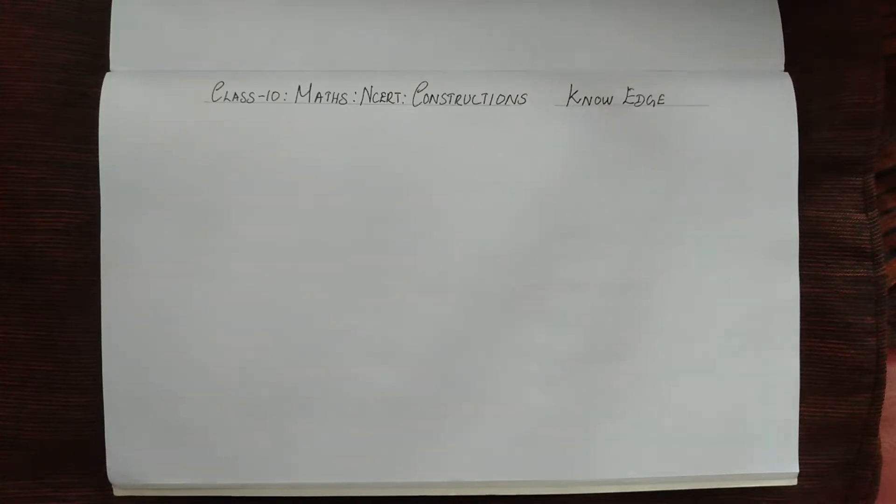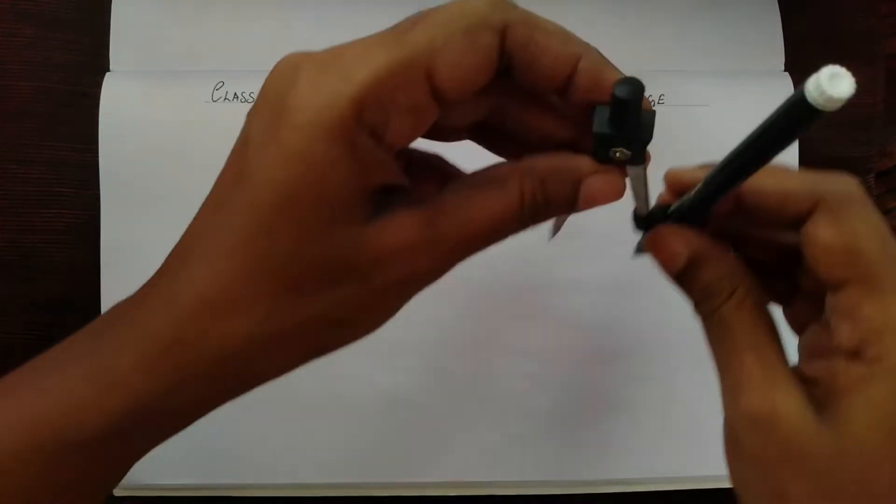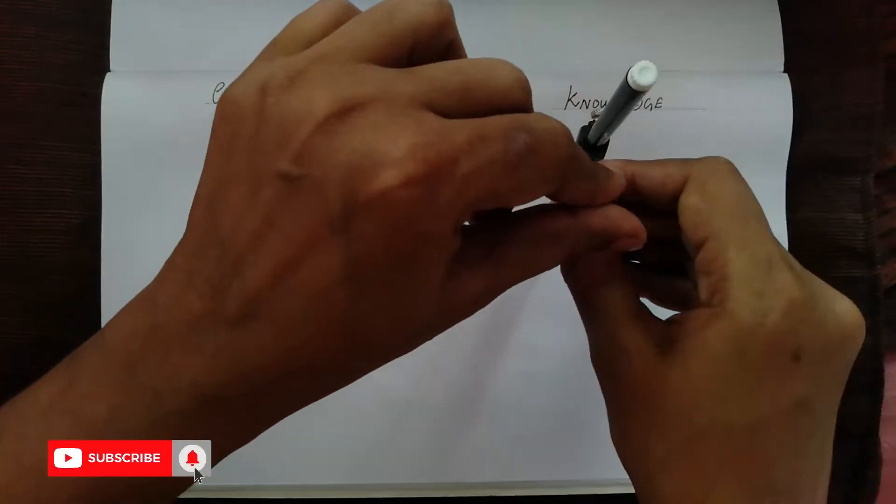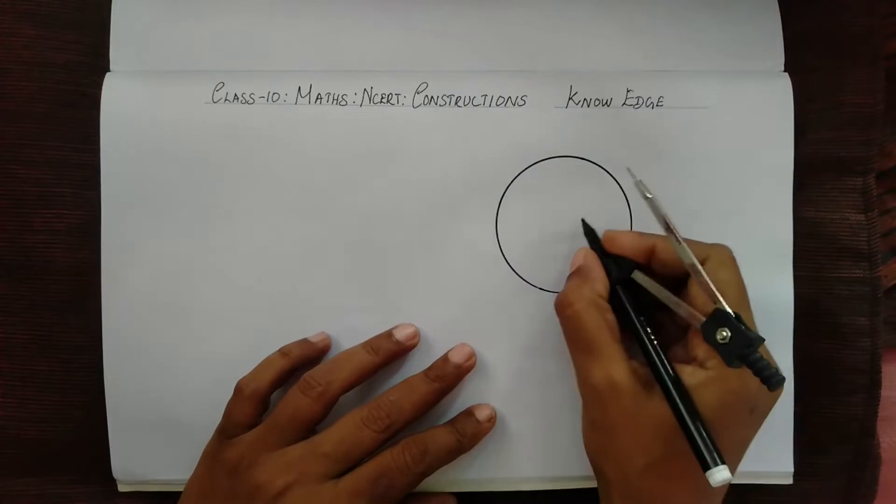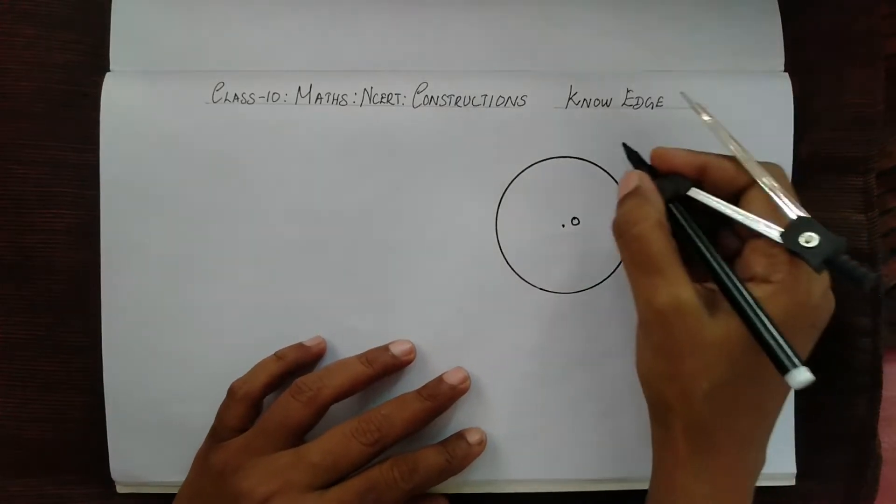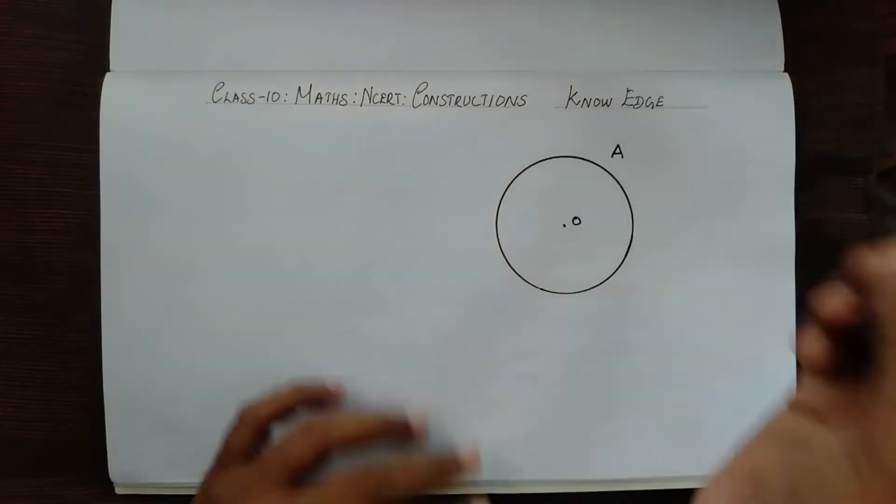So let's begin by drawing a circle first. We have a circle here. Let's name this midpoint as O and let's name the circle as A. This is for our convenience.